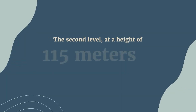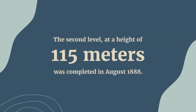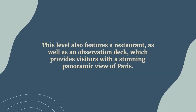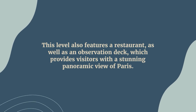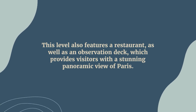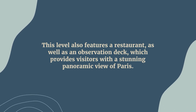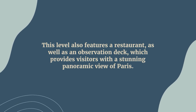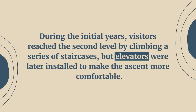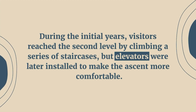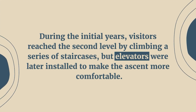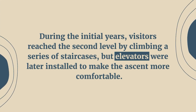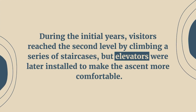The second level, at a height of 115 meters, was completed in August 1888. This level also features a restaurant as well as an observation deck, which provides visitors with a stunning panoramic view of Paris. During the initial years, visitors reached the second level by climbing a series of staircases, but elevators were later installed to make the ascent more comfortable.